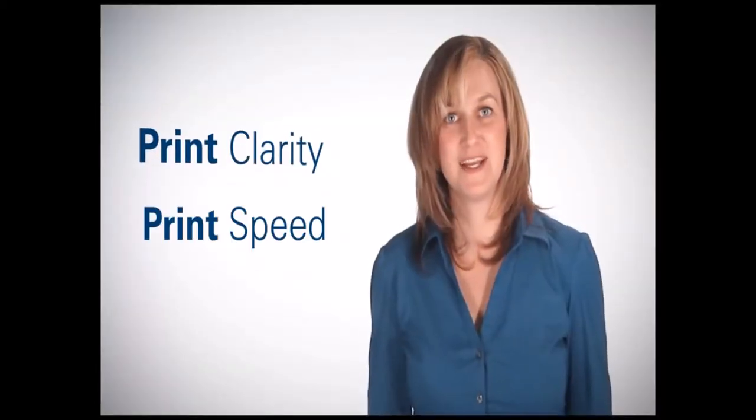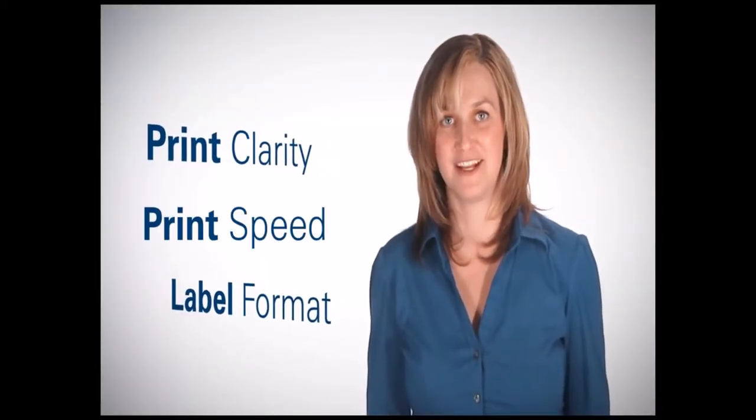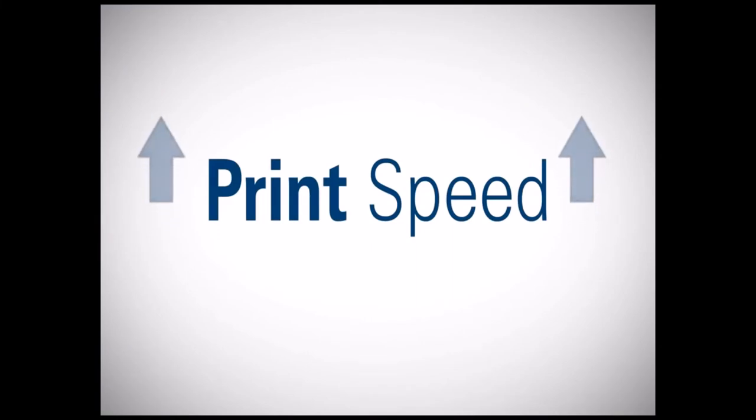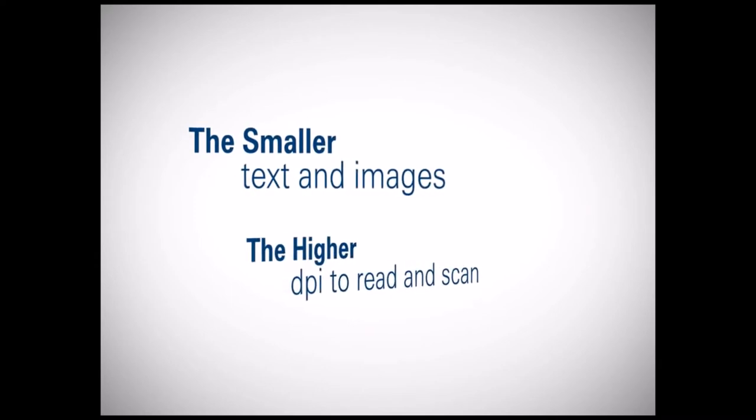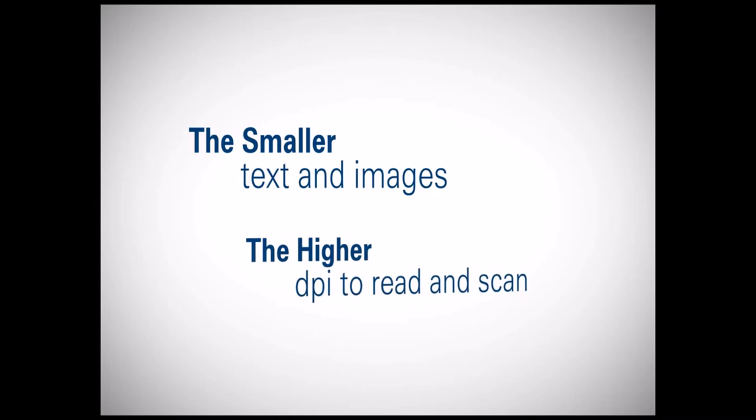Print clarity, print speed, and label format are interrelated. The higher the print speed, the lower the DPI. As a general rule of thumb, the smaller the text and images, the higher the DPI needed to read the text and images and scan the barcode. For more information, visit us at Zebra.com.